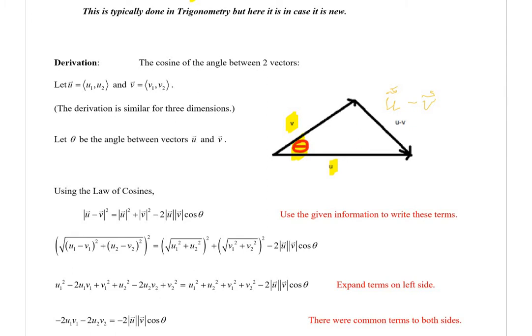What we have here on the right, this is vector u minus vector v.